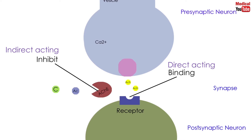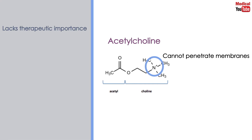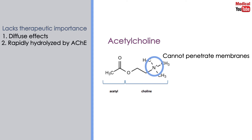In this lecture we will discuss the direct-acting cholinergic agonists. The first one of course is acetylcholine itself. It is a quaternary ammonium compound that cannot penetrate membranes. It lacks therapeutic importance because of two reasons: first, it has diffuse effects as it is the neurotransmitter of parasympathetic and somatic nerves, as well as autonomic ganglia. And second, it is rapidly inactivated by cholinesterases.